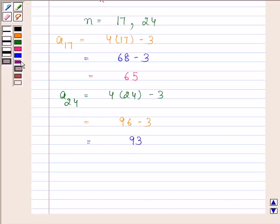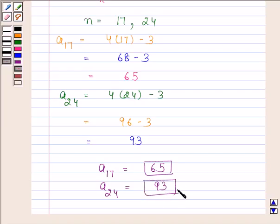Hence, the required 17th term, a17, is 65, and the 24th term, a24, is 93. This is our answer.